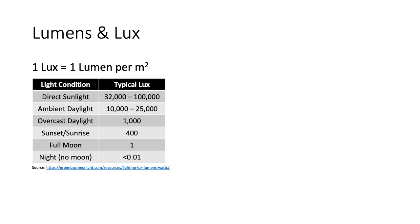To give you some perspective, direct sunlight when you walk outside your house, depending on where you live in the country, could be anywhere between 32,000 to 100,000 lux. Ambient daylight will range from 10,000 to 25,000 lux. At night with no moon, you'll get almost zero lux values. The Optimara website recommends about 10,000 lux to grow African violets in their greenhouse.